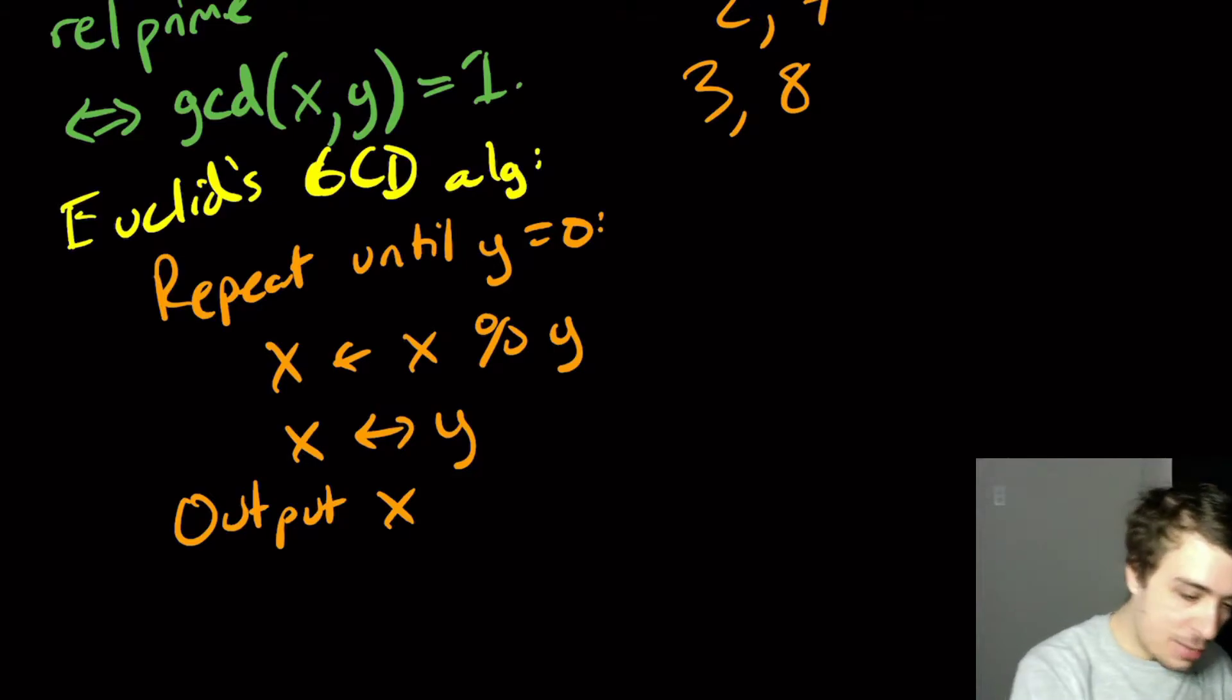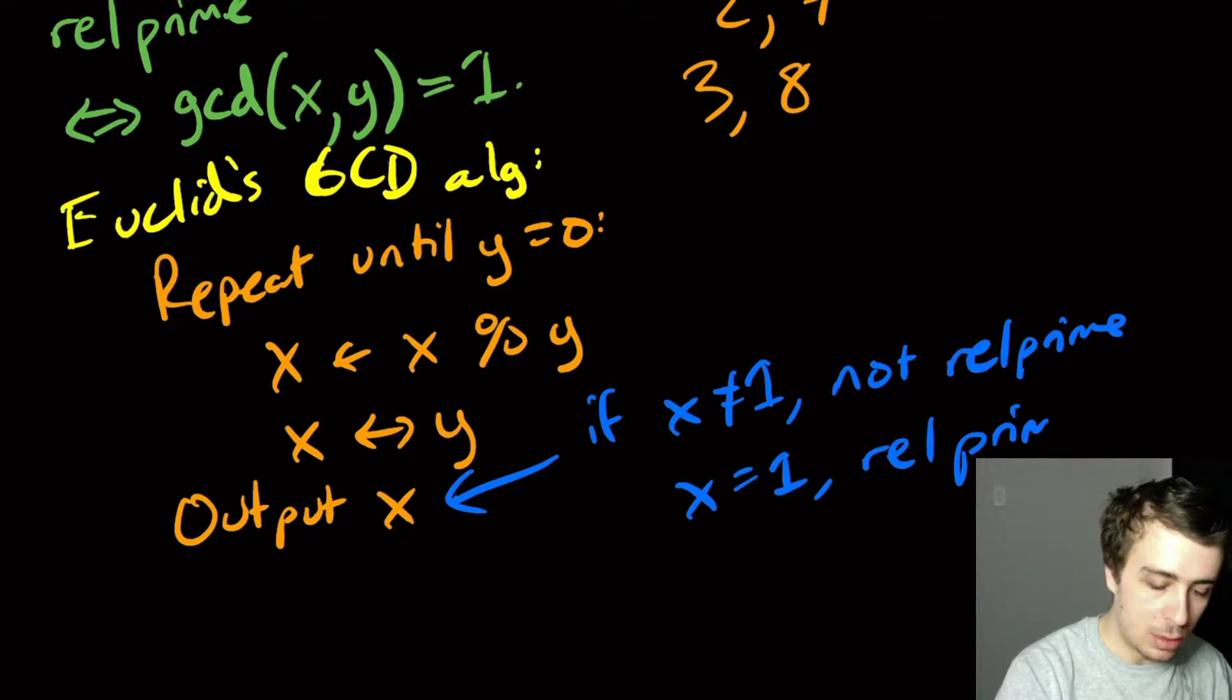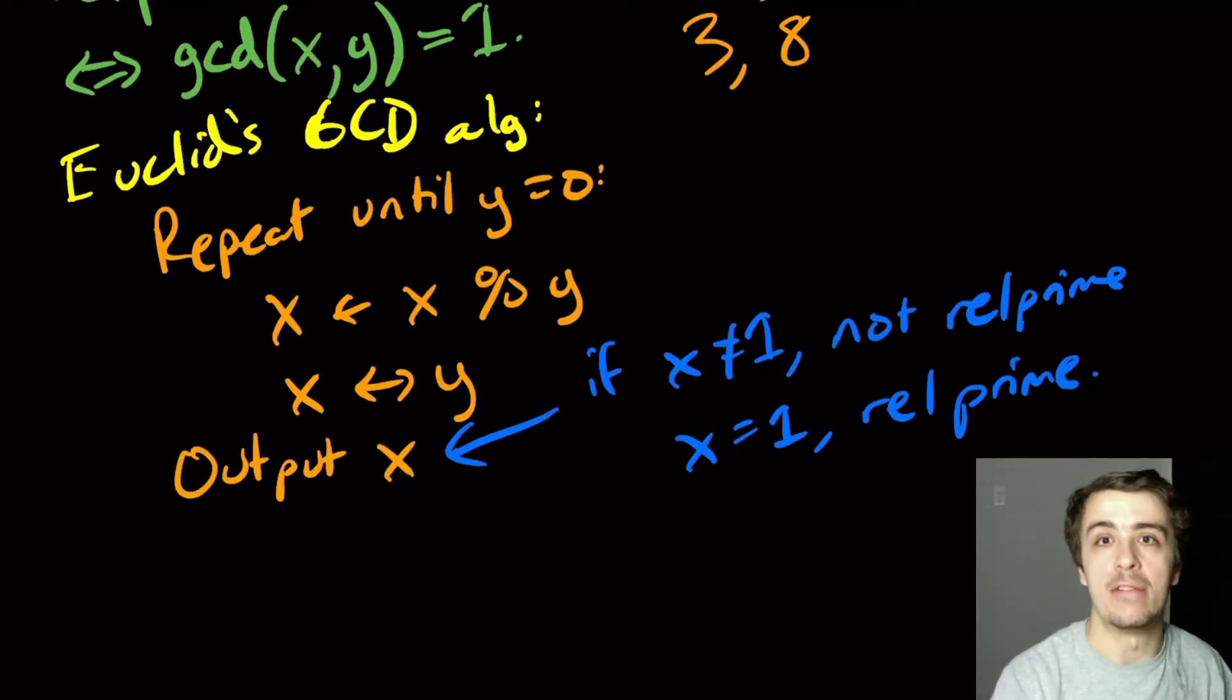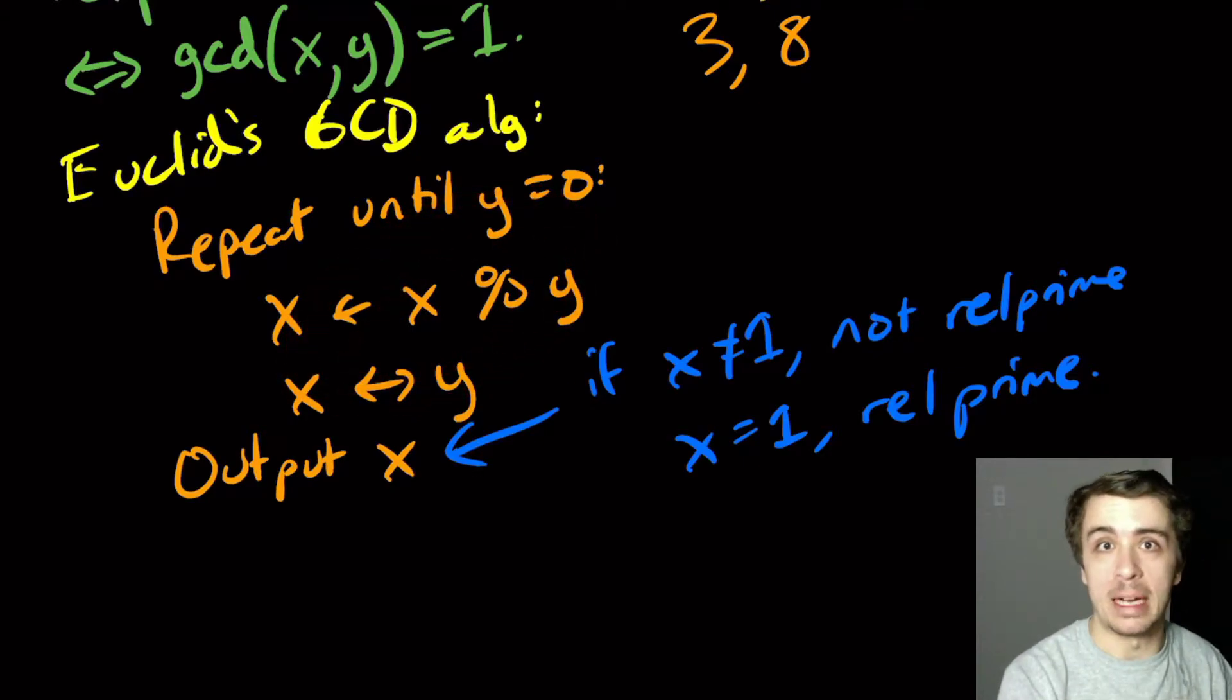So then if this is not equal to 1, then not relatively prime. And if x equals 1, then they are relatively prime, because it's outputting the GCD value. And I'm not going to prove that this is actually correct, but I want to analyze how many steps that it takes.